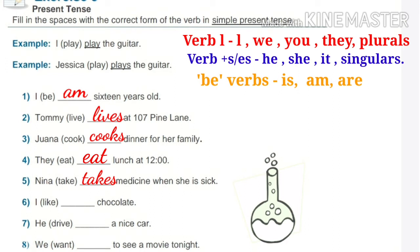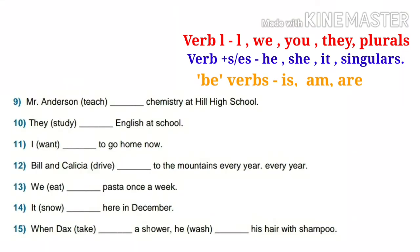Nina takes medicine when she is sick. I like chocolate. He drives a nice car. We want to see a movie tonight. Let's see the next examples. Mr. Anderson teaches chemistry at Hill High School. Mr. Anderson is a singular subject here, so we will write verb S or ES.